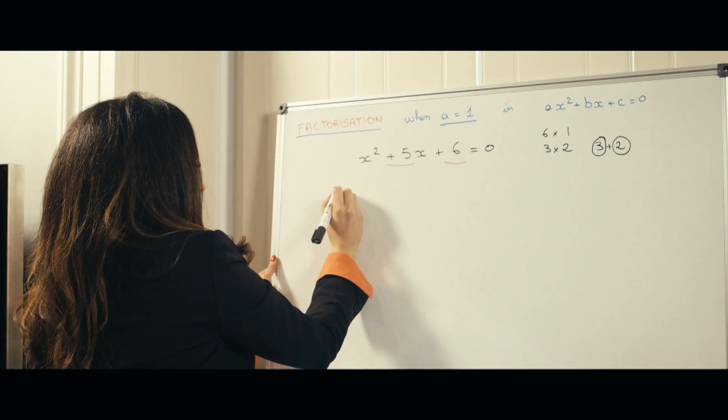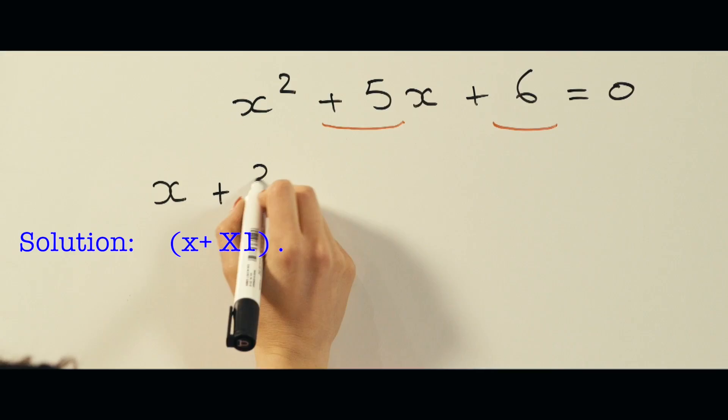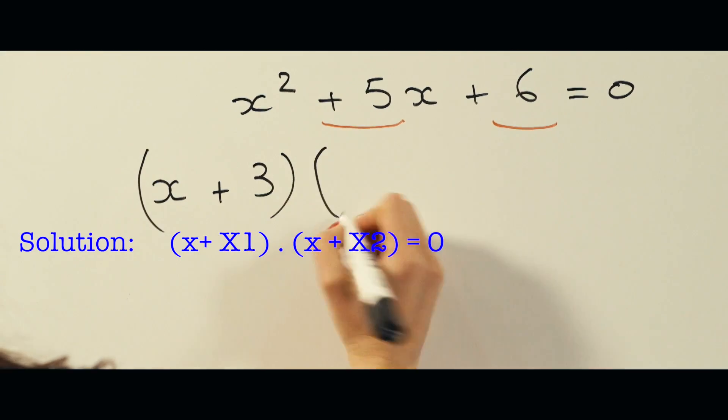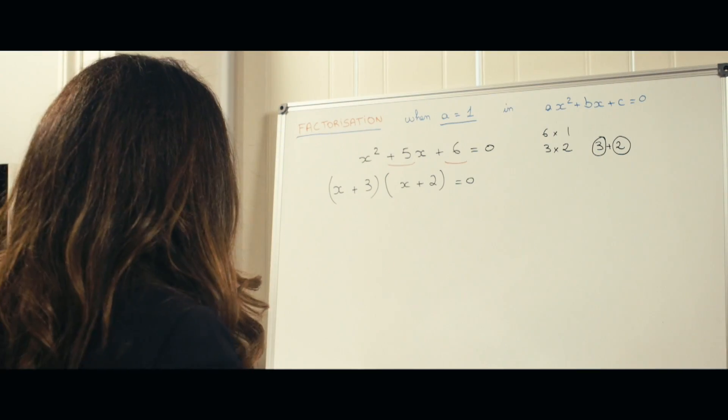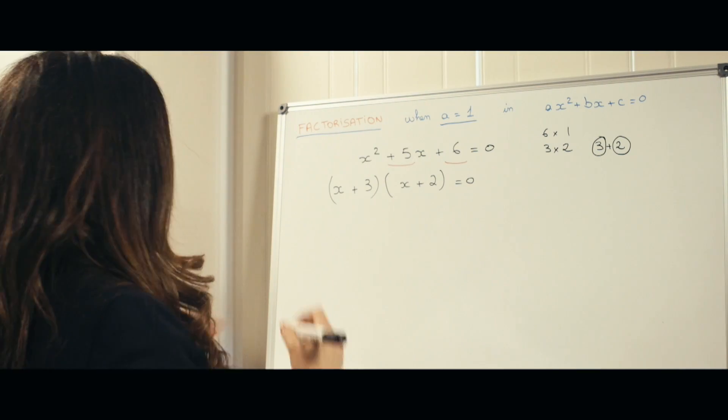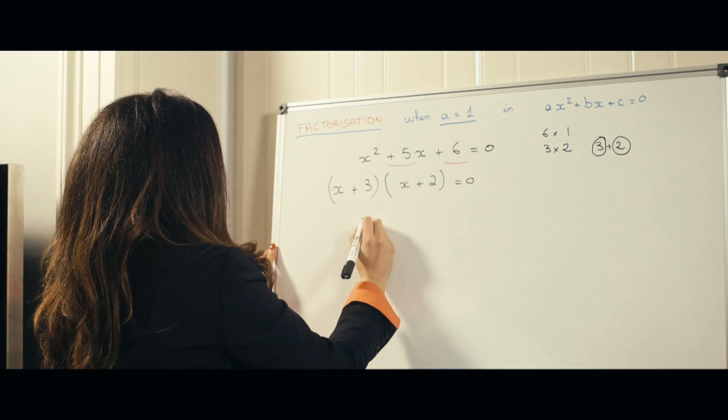So how do you factorize that? X plus 3 times x plus 2 is equal to 0. Let's just pick a different example, but still with the same numbers, but different sign just to understand it.